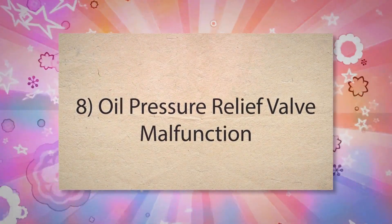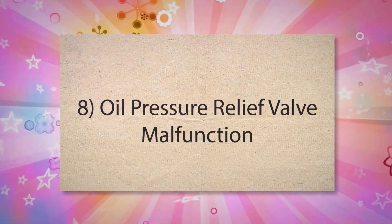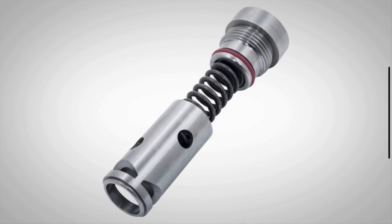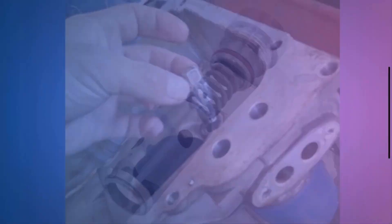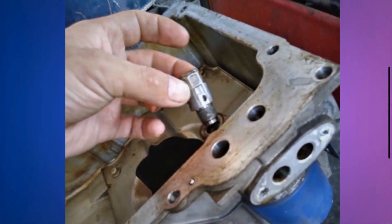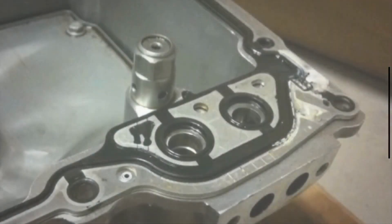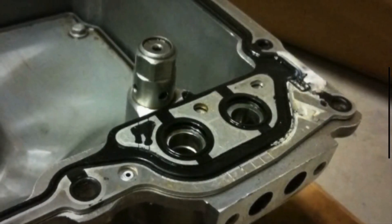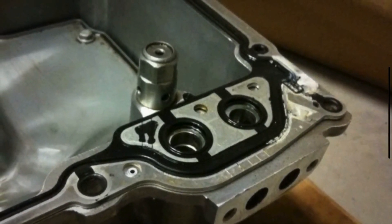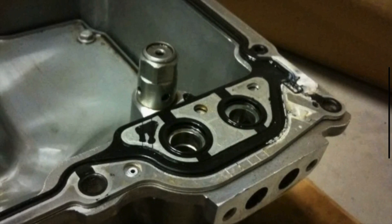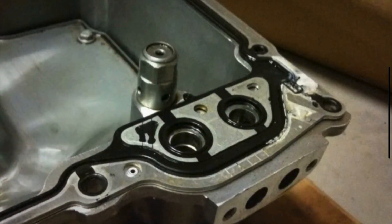8. Oil pressure relief valve malfunction: The oil pressure relief valve regulates the oil pressure within the engine. If this valve is stuck open or is malfunctioning, it can cause the oil pressure to drop, triggering the PO522 code. A stuck valve can lead to excessive oil flow back to the oil pan, reducing the pressure needed for proper engine lubrication.